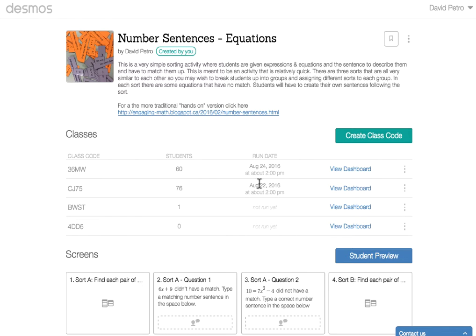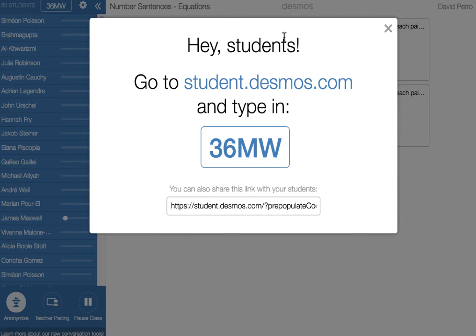Again, just like in the other Desmos activity, you're going to create your own class code here. I'm going to use one of my old class codes. And again, you're going to let students know that they have to go to student.desmos.com and type in the class code that you have.